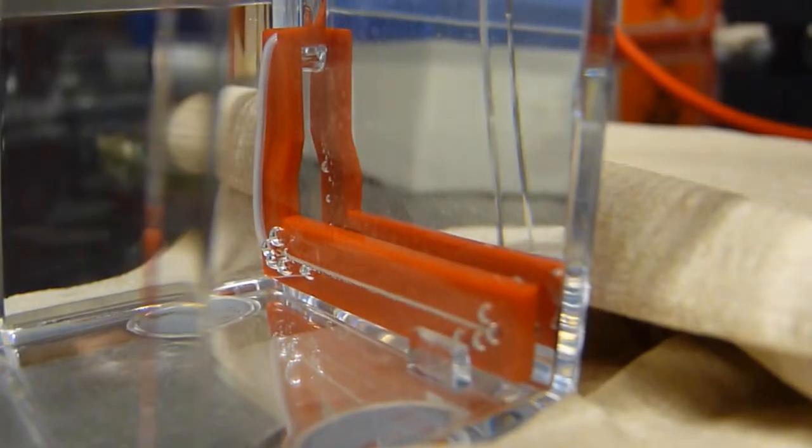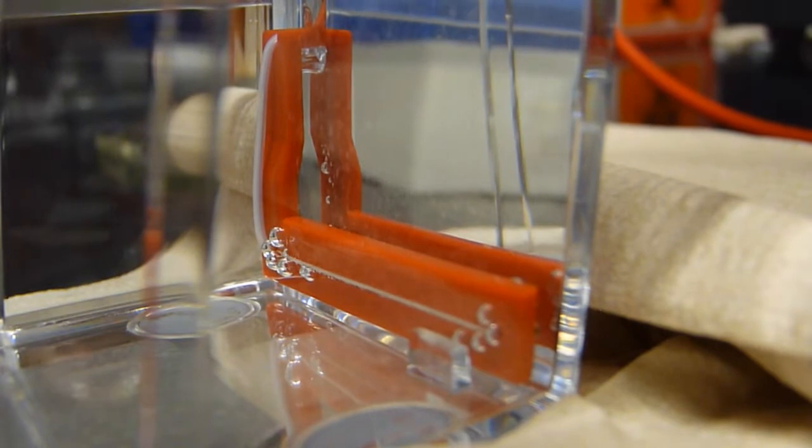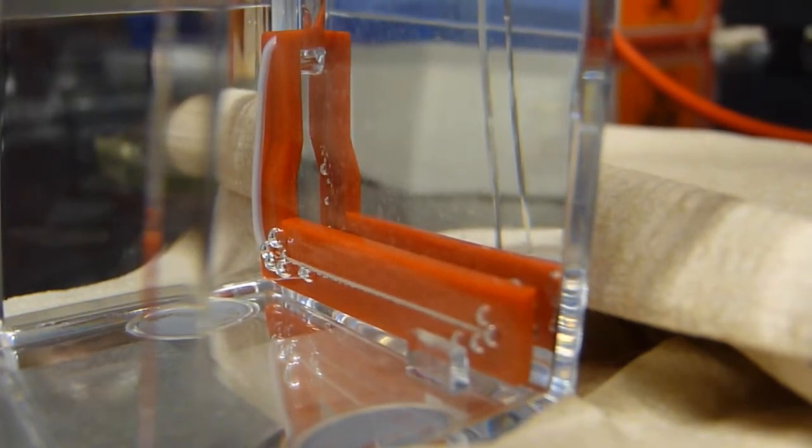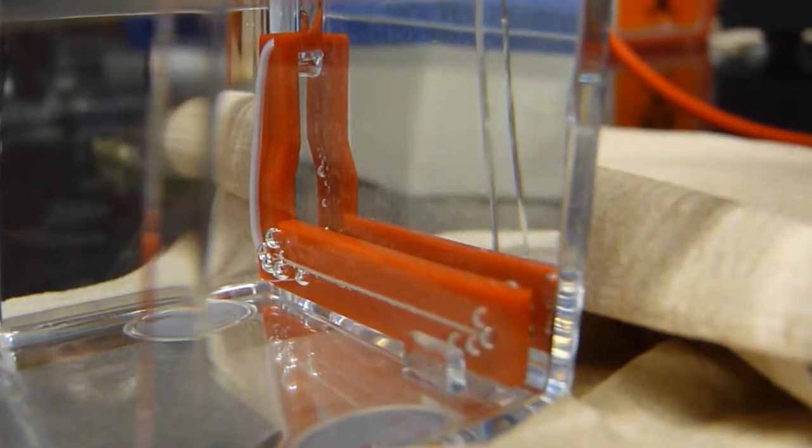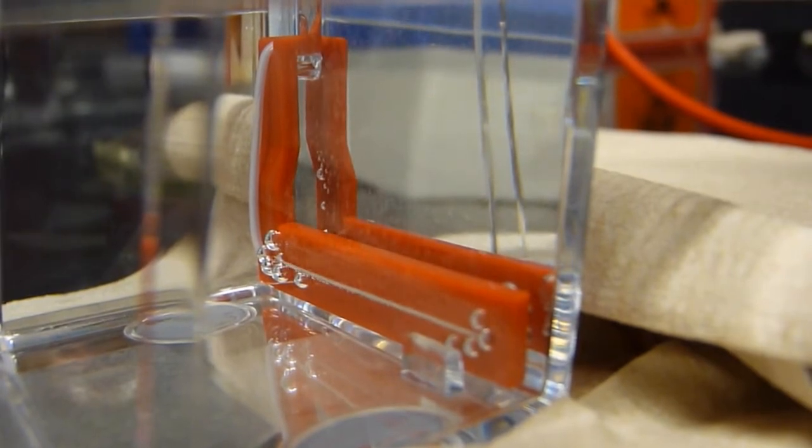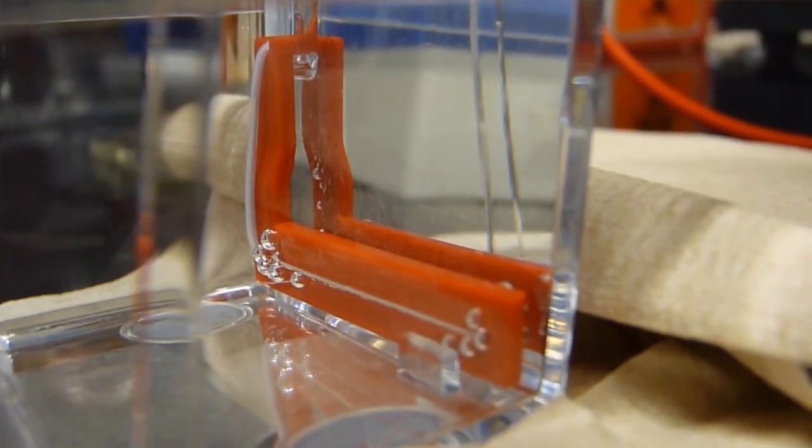So now we're running our gel. You'll know that the gel is running because you'll see bubbles forming on the ends of the tank. The gel run will take approximately 40 minutes, but you can also know when your gel is done because you'll see the dye that you loaded into your sample wells migrate about three-fourths of the way into the gel.